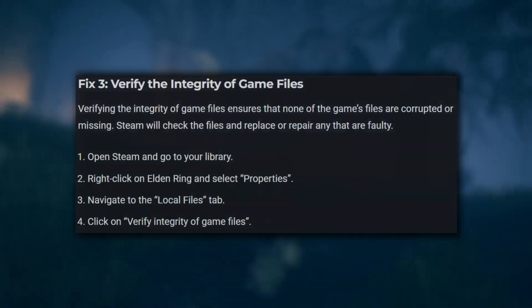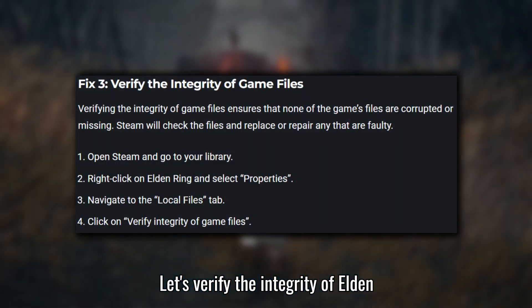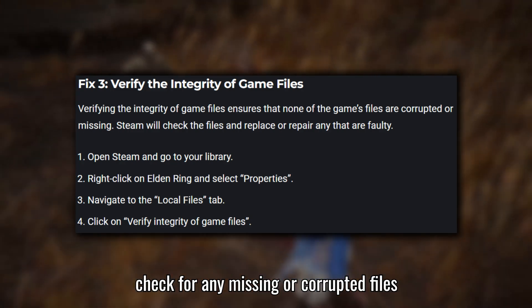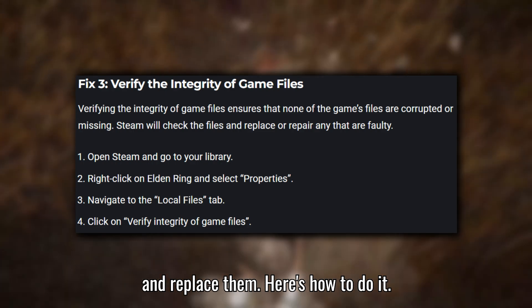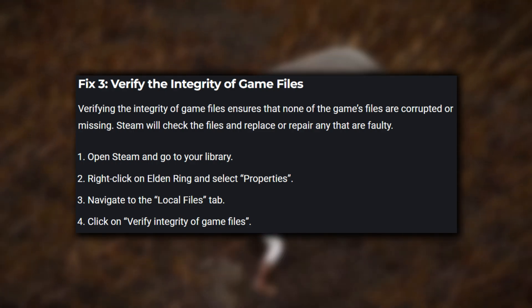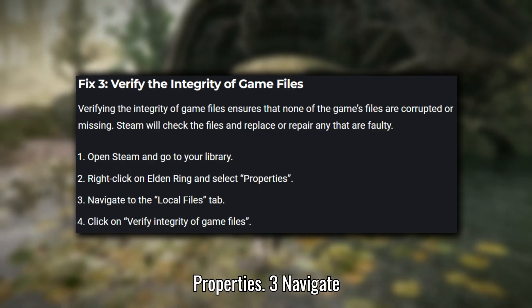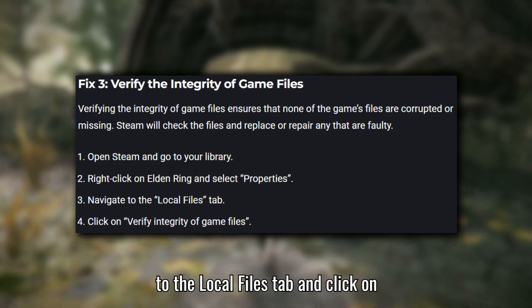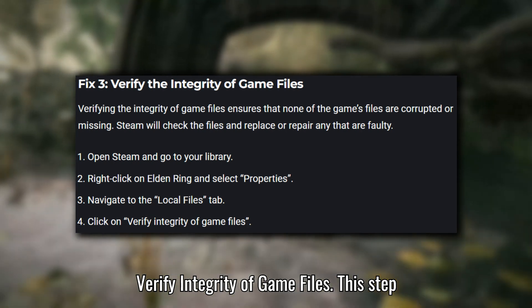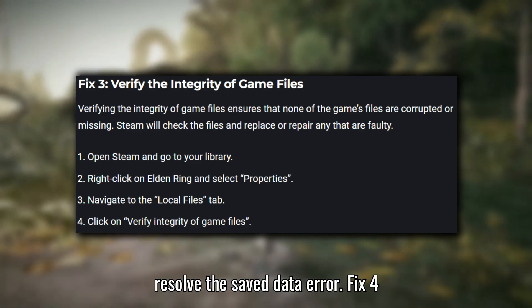Fix three: Verify the integrity of game files. Let's verify the integrity of Elden Ring's game files. This process will check for any missing or corrupted files and replace them. Open Steam and go to your library. Right-click on Elden Ring and select Properties. Navigate to the Local Files tab and click on Verify Integrity of Game Files. This ensures your game files are intact and properly configured, which can often resolve the save data error.